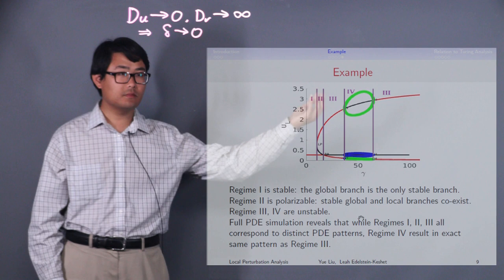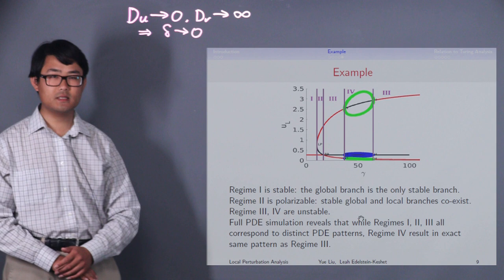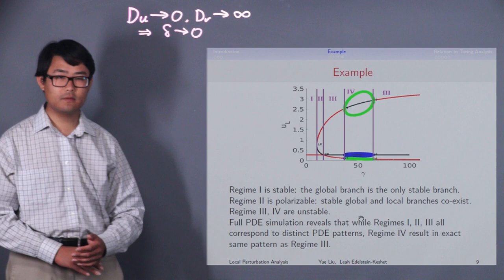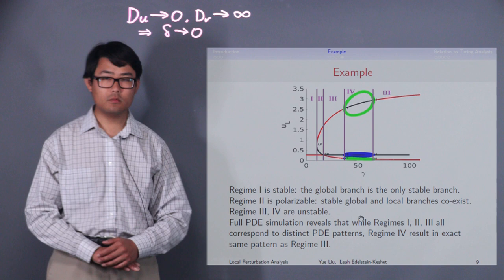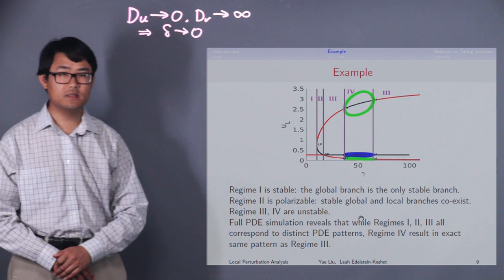Regime two is interesting. We call this regime the polarizable regime. Because in this regime, the global branch is still stable, however, it coexists with a stable local branch. This means a strong enough localized perturbation can push the system away from the global branch, into the local branch, and lead to pattern formation. And in fact, the location of this unstable branch here determines the threshold for when that will happen.